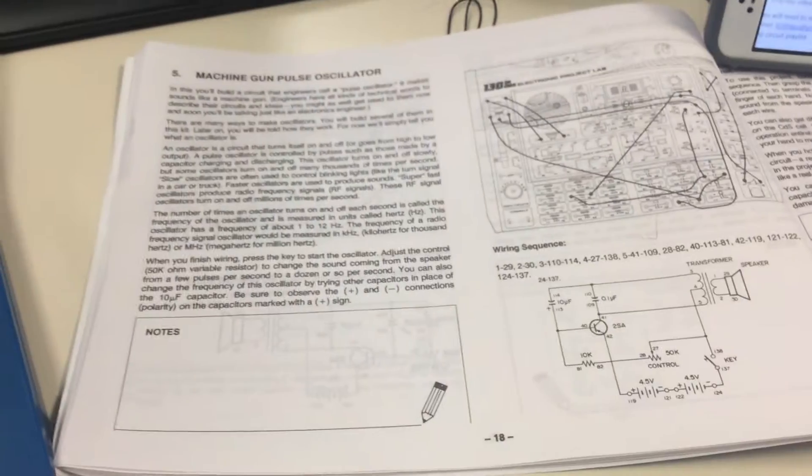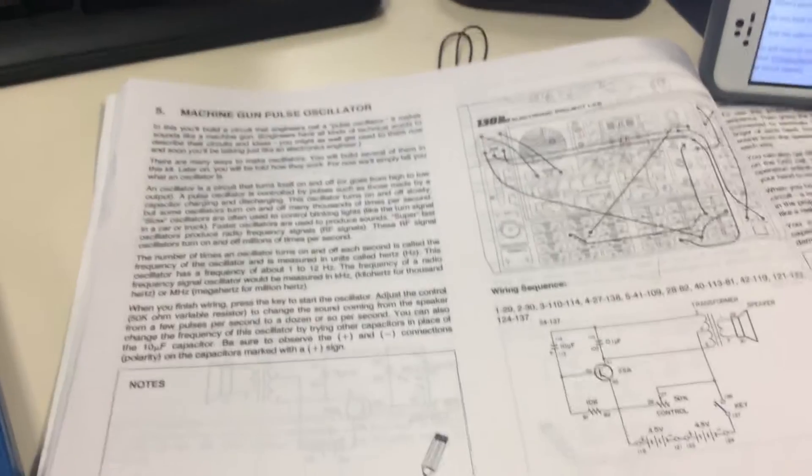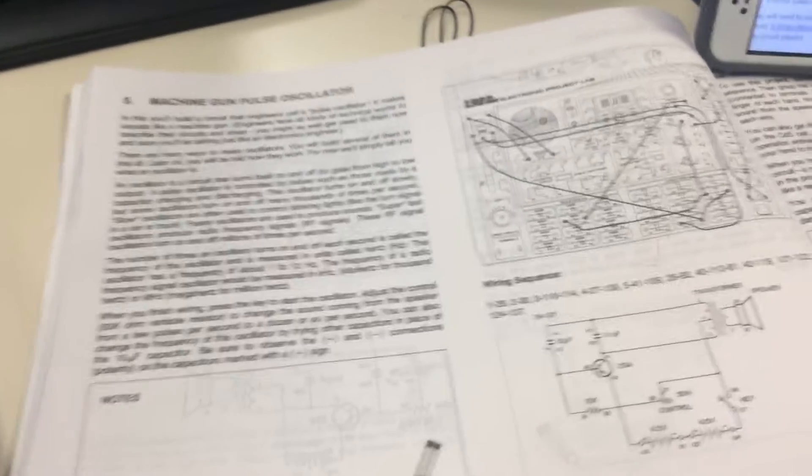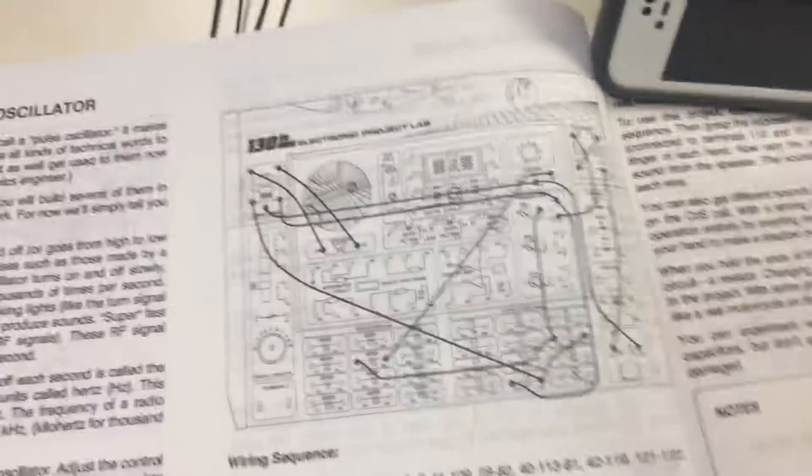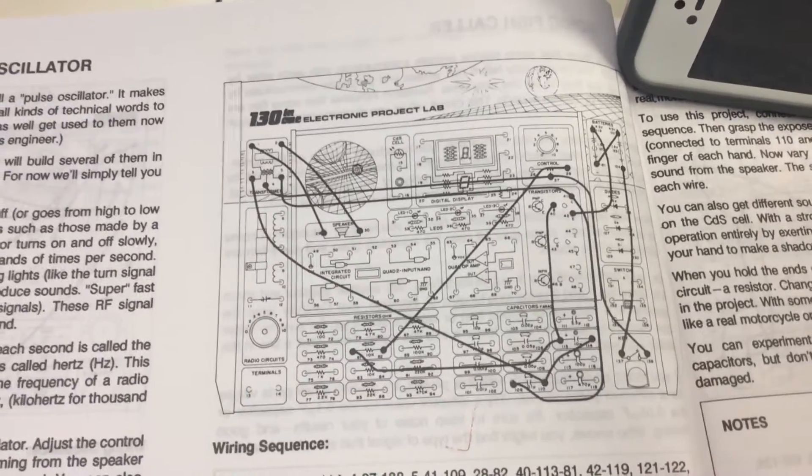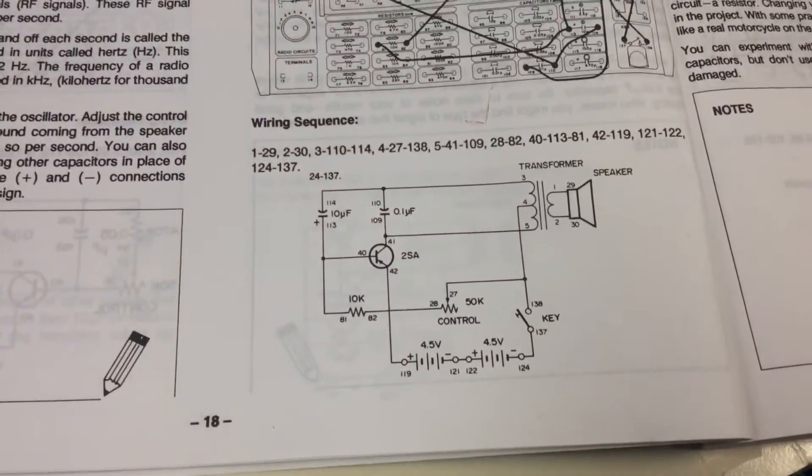Hey guys, today I'm showing you one of my circuits that I've done. This one is a machine gun pulse oscillator. Here is the picture of where the wires go, and the map of it is right here.